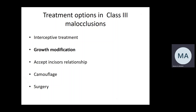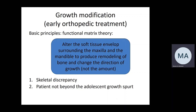Regarding growth modification: cases with Class III malocclusion should begin growth modification before the pubertal growth spurt — this is different from Class II, where we usually wait for the growth spurt. The patient should be younger, typically still in the mixed dentition. The principles are based on the functional matrix theory: we aim to change the soft tissue envelope to modify growth and lead to bone remodeling and change in the direction of growth, though not the actual amount, which is determined genetically. The patient should have skeletal discrepancy and not yet be beyond the adolescent growth spurt.